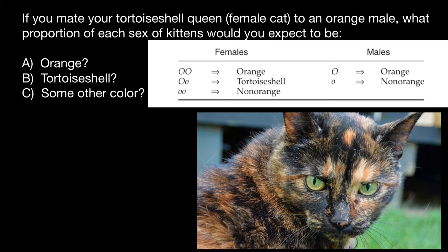I don't like the standard notation, so let me show you a different one. Orange cats can have two red X chromosomes. The heterozygous genotype would be one red and one blue X chromosome — red standing for the active allele, blue for the defective allele. Two defective X chromosomes is the third genotype. Males are hemizygous, having one X chromosome and one Y chromosome. These are the two possible male genotypes.